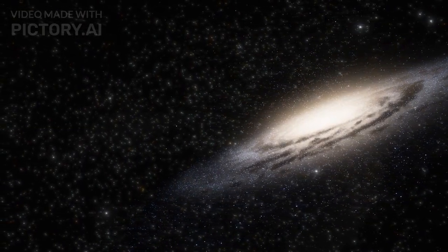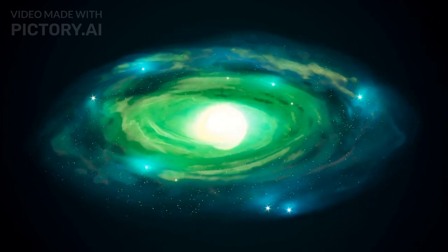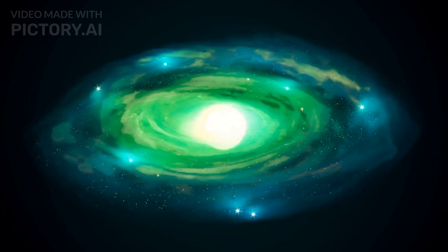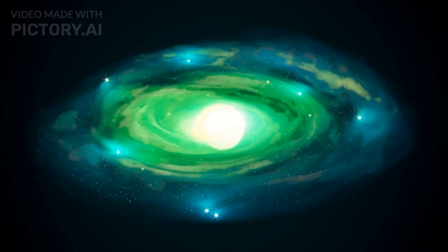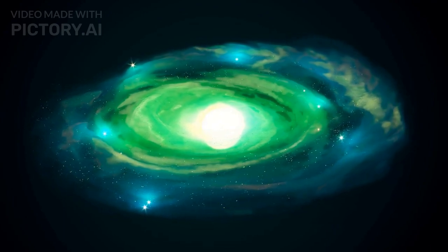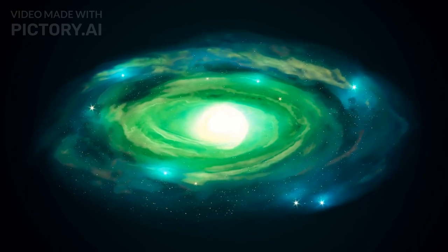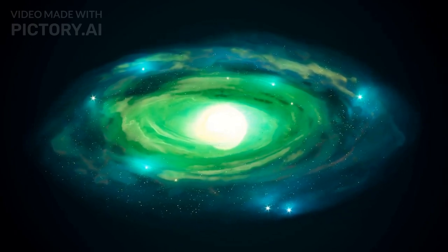Number 2. Messier 51, the Whirlpool Galaxy, also known as M51 or NGC 5194, is an interacting grand-design spiral galaxy with a Seyfert 2 active galactic nucleus. It lies in the constellation Canes Venatici and was the first galaxy to be classified as a spiral galaxy.